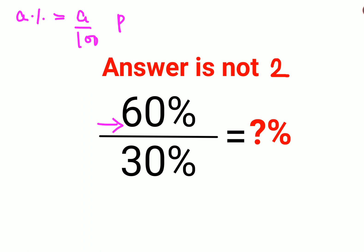Why like that? Because see, per cent, per means what? Means division and cent means 100. So basically you're trying to do 60 percent will be 60 upon 100 divided by 30 percent. That is 30 upon 100.